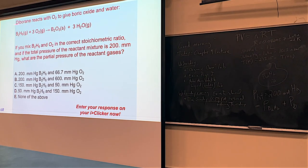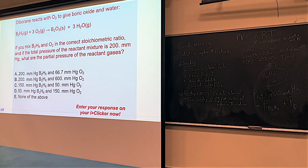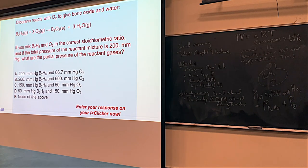Looking at the answer choices: option A lists 200 for one pressure — that can't be right, because the total would then exceed 200 when you add both pressures together. Option B has 200 and 600, which is clearly too large. So the answer must be C or D.